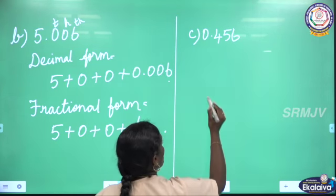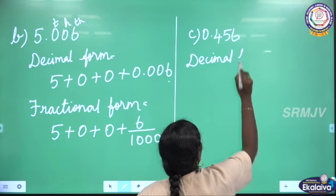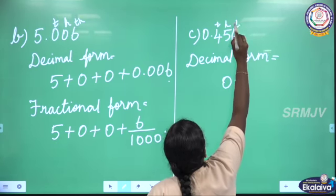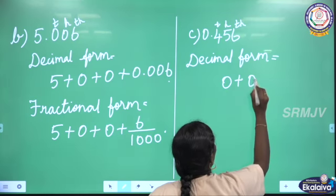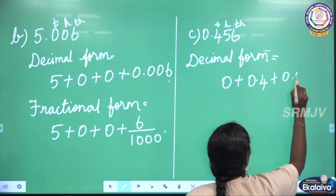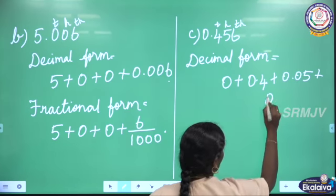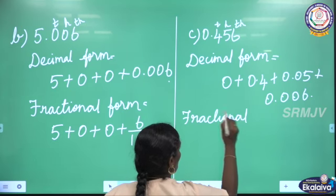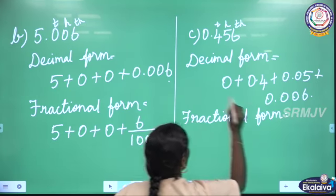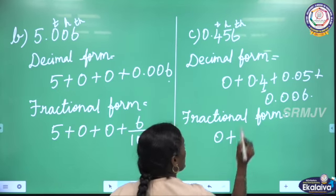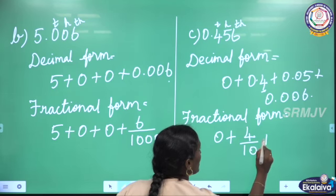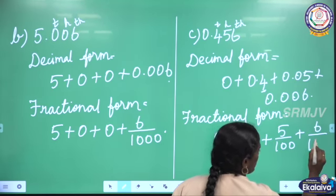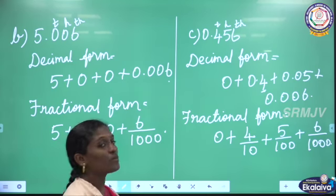See the next one: 0.456. First, decimal expanded form: the whole number part is 0, plus 4 is in the 10th place giving 0.4, plus 5 is in the 100th place giving 0.05, plus 6 is in the 1000th place giving 0.006. Now the fractional form: whole number part is 0, plus 4 by 10, plus 5 by 100, plus 6 by 1000. This is the decimal form and fractional form for the given decimal number.